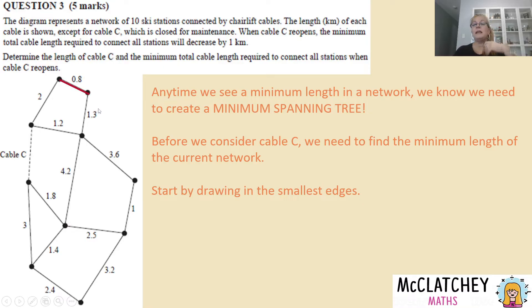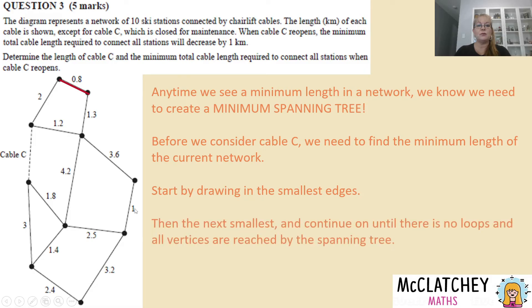So what I like to do is find the smallest edge first of all which is this 0.8 up here. So I'm going to keep those smallest ones in there because those smallest ones will allow me to achieve a minimum cable length. So the next biggest one is this number 1 over here. So let's draw that one in and we're going to keep doing this until we've got no more loops in the network. This is what we consider to be a loop and until we've reached every vertex by this spanning tree.